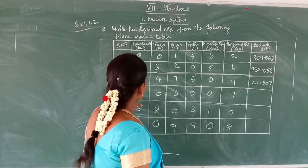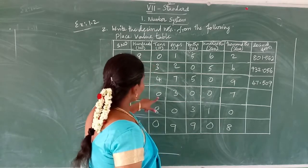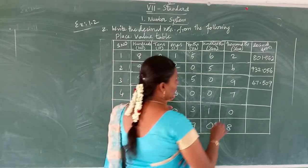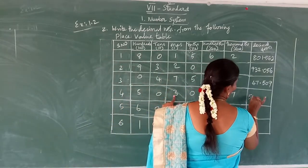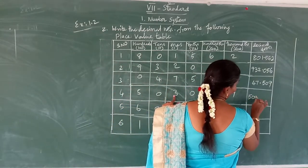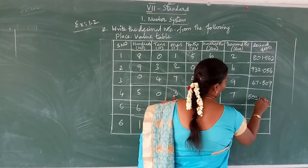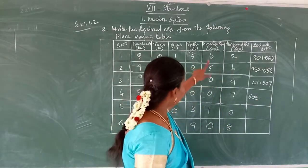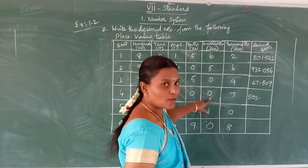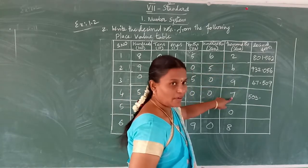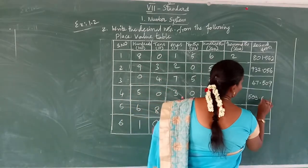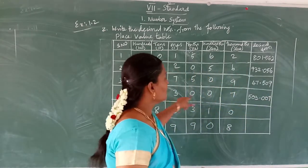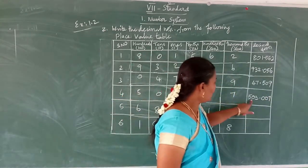See the fourth one. In the hundreds place is five, tens place is zero, ones place is three — so 503. Now the decimal part: tenths place is zero, hundredths place is zero, thousandths place is seven. So five hundred and three point zero zero seven — 503.007.